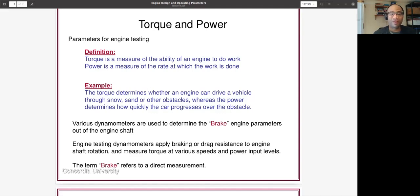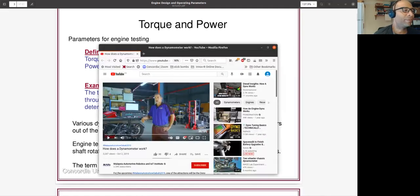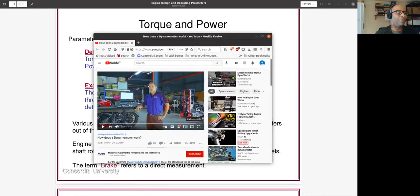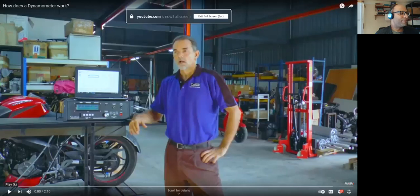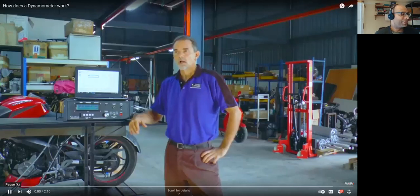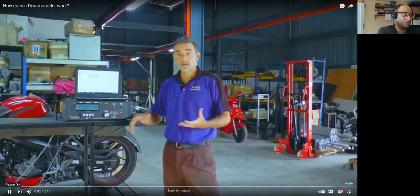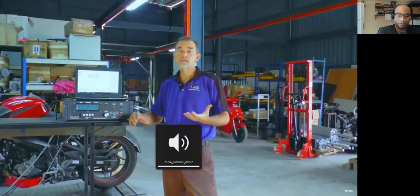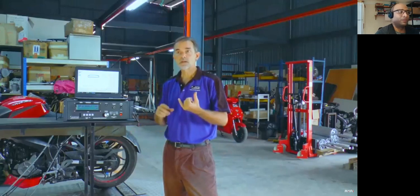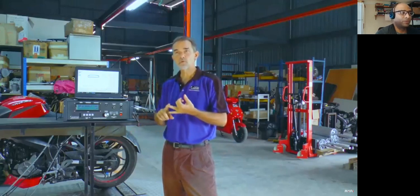The way we actually measure these parameters and see how they relate to each other is with devices called dynamometers. I'm going to play a clip from a small Malaysian company that makes their own dynamometers. A dynamometer is essentially a piece of equipment to measure the speed, the torque, and the power from an engine.